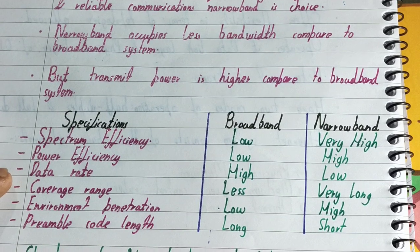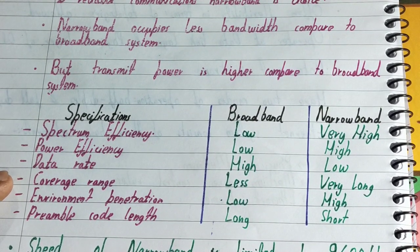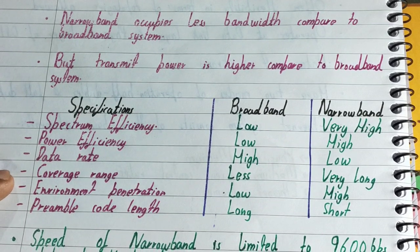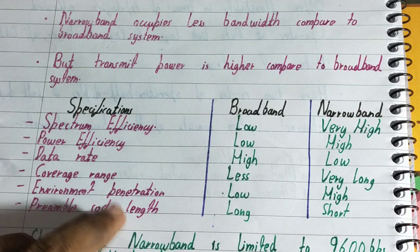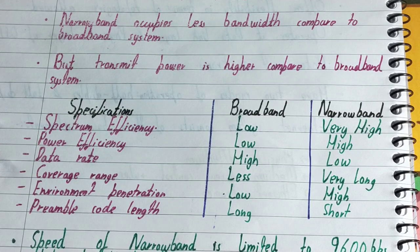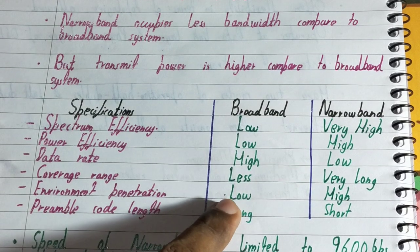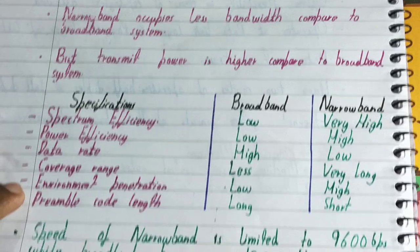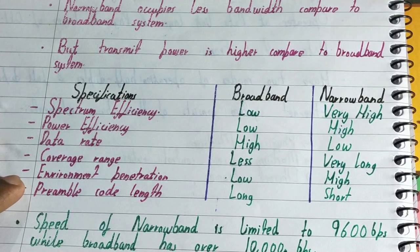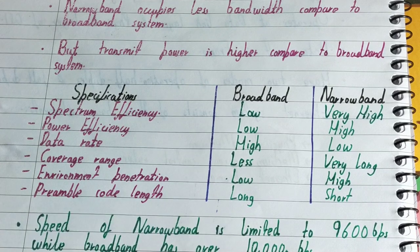For coverage range, broadband offers a very short range, but narrowband offers a very long coverage range. Regarding environment penetration — when using telecommunication networks, there are always structures that act as obstacles in the path of radio frequency transmission. In that case, broadband performs poorly but narrowband is very good at penetrating obstacles.